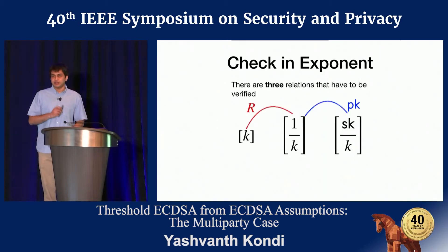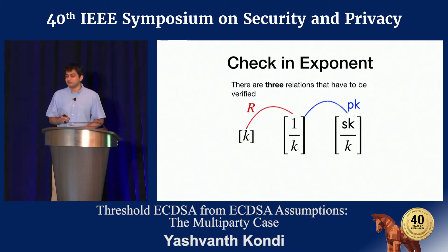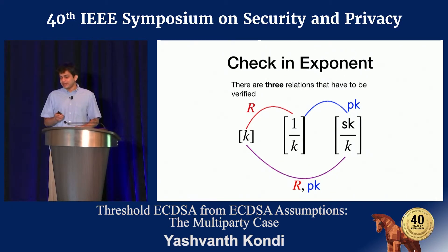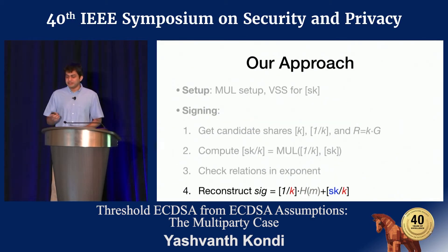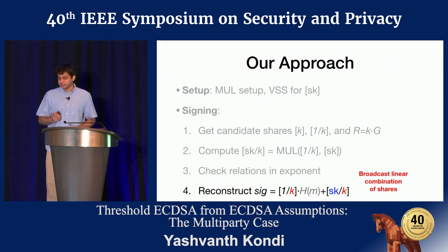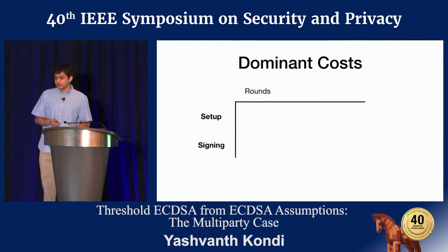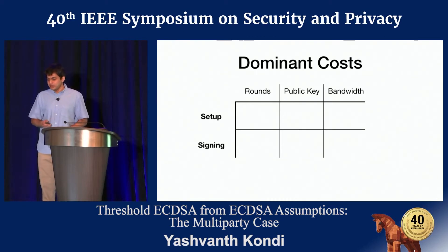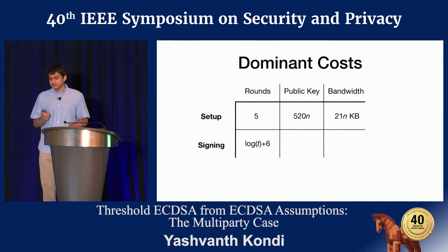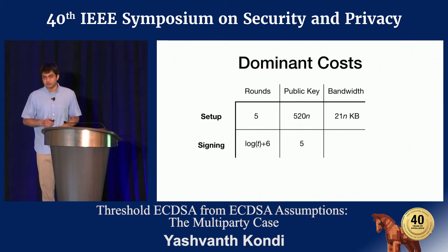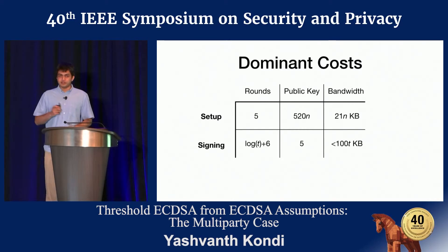That's how we verify the first relation. We use similar techniques to verify the second and final pairs of relations — each check costing a couple of exponentiations and as many field elements transmitted in two broadcast rounds. When batched together, costs amortize and can be run in parallel. The final step, once all sharings are verified, is to broadcast a linear combination of shares. Looking at dominant costs: setup needs five rounds, ~500 public key operations per party, and 21n kilobytes transmitted. Signing takes log(n)+6 rounds, only five exponentiations online, and ~100 kilobytes per party.